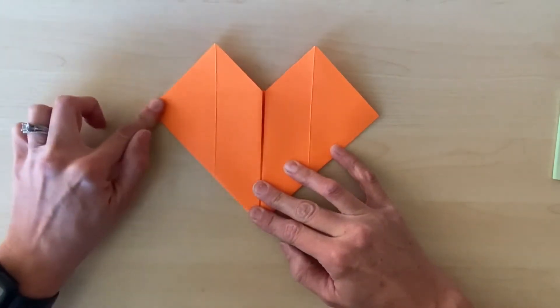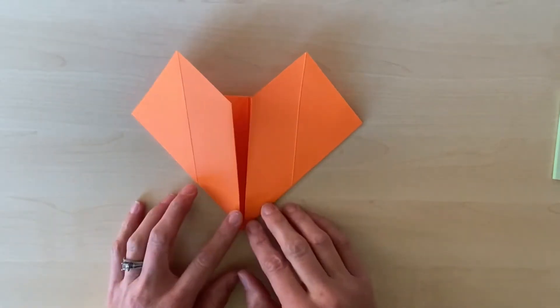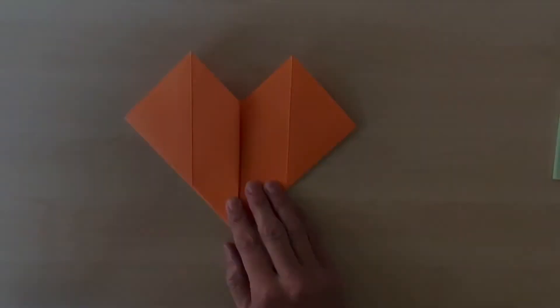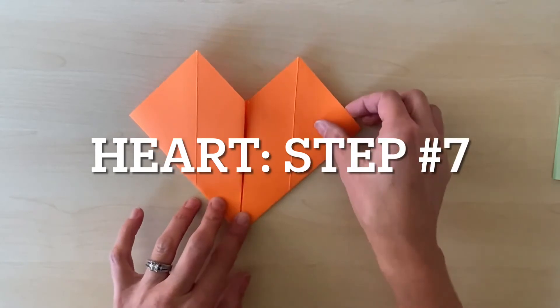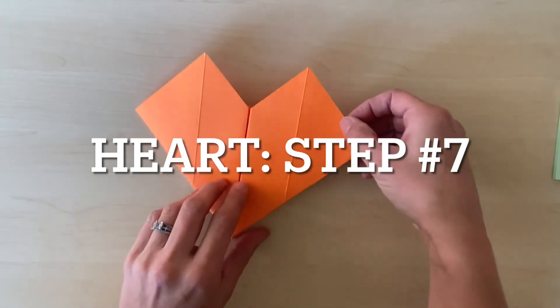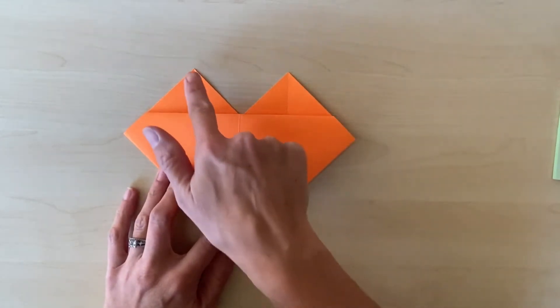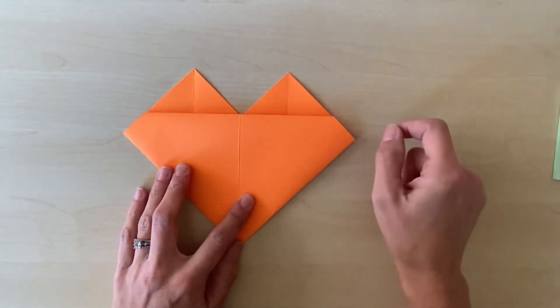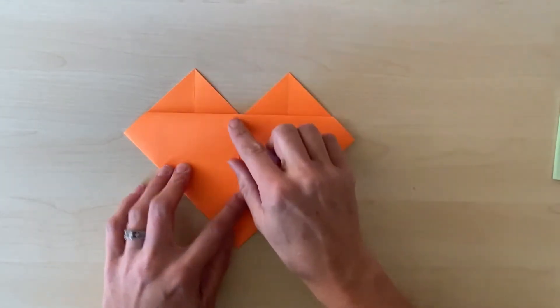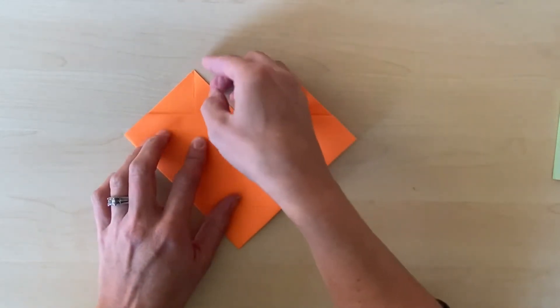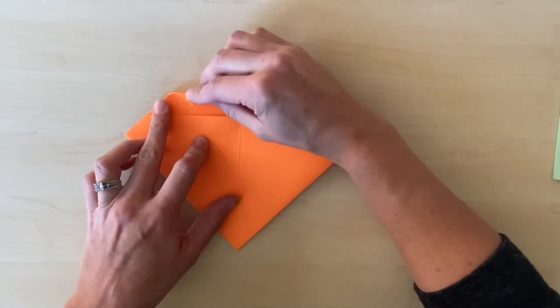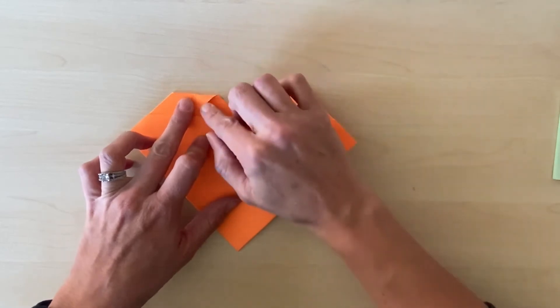Now I'm going to flip it over and take these top two corners and pull them down to the fold so that the point meets the fold. Fold it down and press, hold it down and press.